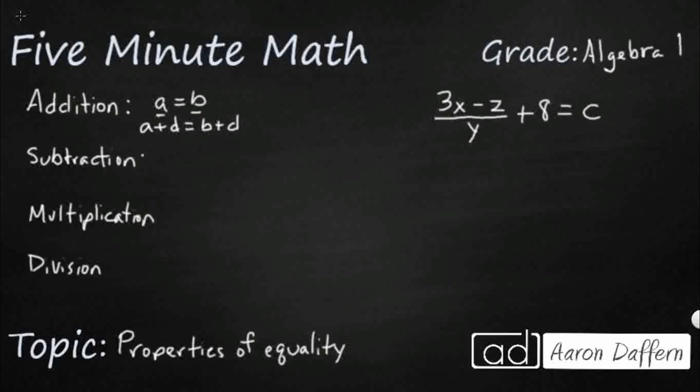And so the subtraction property of equality says the same thing. If A equals B, now you can subtract D from both sides. As long as you do the same thing to both sides of the equation, you're good. So that's the subtraction property of equality.